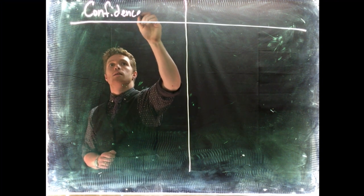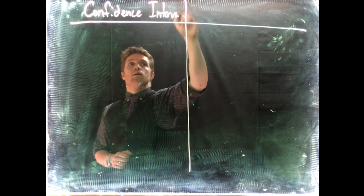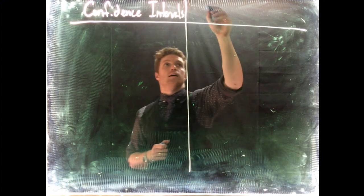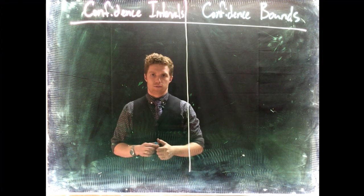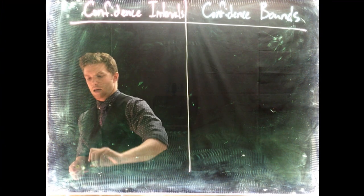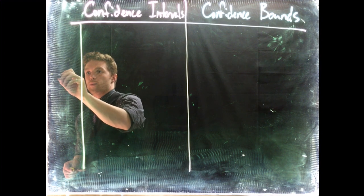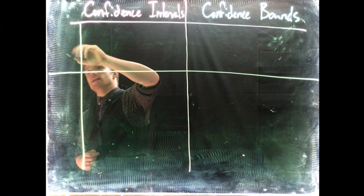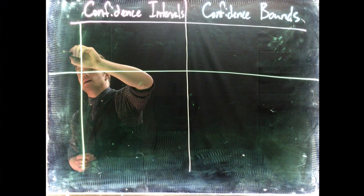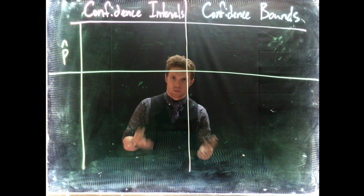This side is going to be our confidence intervals, and this side is going to be our confidence bounds. We also have to deal with two different types of data. We can either be dealing with categorical data, or we can be dealing with numerical data. Categorical data is like if we're dealing with p-hat — that's our categorical data, we're dealing with sample proportions. Or we can be dealing with x-bar.